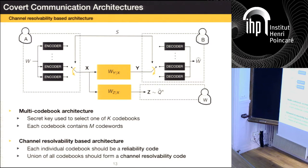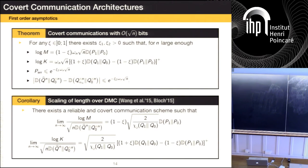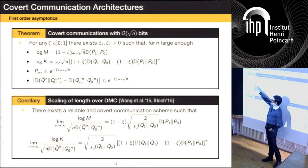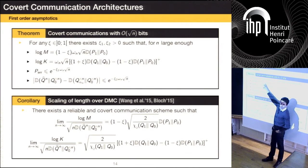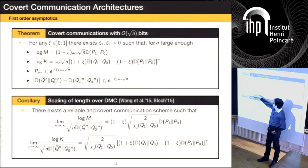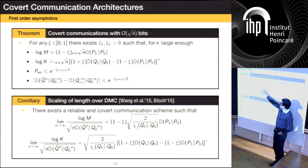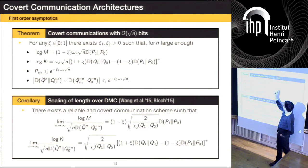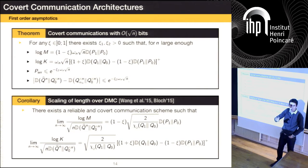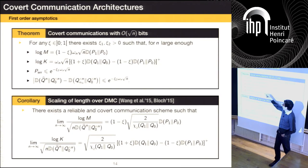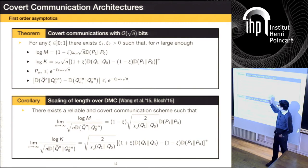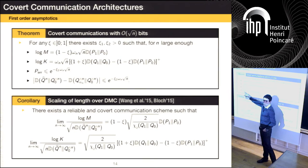Formally, you can prove that if you choose the log of the number of messages to be on the order of ωn · √n with a constant involving D(P1 ‖ P0), and you choose the key to be also on the order of ωn · √n with a constant that is D(Q1 ‖ Q0) − D(P1 ‖ P0), that term cannot be negative — it goes away if D(P1 ‖ P0) > D(Q1 ‖ Q0), meaning your main channel is actually better at distinguishing than the warden's channel. Under those conditions you don't need a key; otherwise you need a little bit of key to mix things further. Under these conditions, your code will induce a distribution very close to Q0^n.